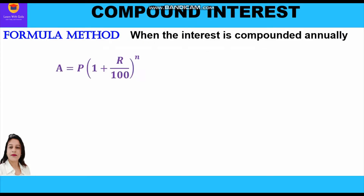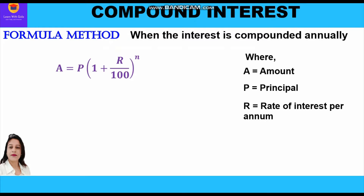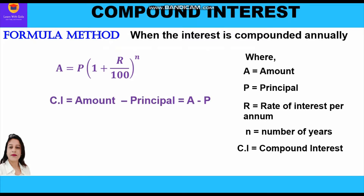When the interest is compounded annually, the formula for amount that we use is A = P(1 + r/100)^n, where A is the amount, P is the principal, r is the rate of interest per annum, and n is the number of years. Compound interest is the difference between amount and principal, that is A minus P, so CI = A - P.